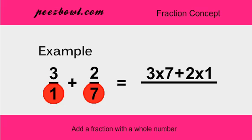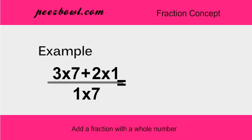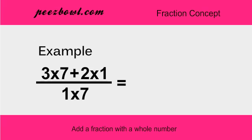For denominator, we simply multiply both fractions denominators. After doing these steps, we find that numerator will be the addition of 21 and 2, that is 23.